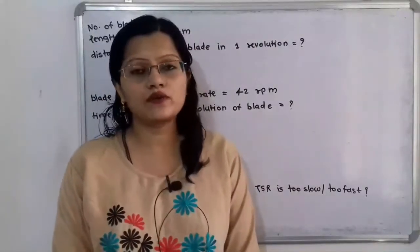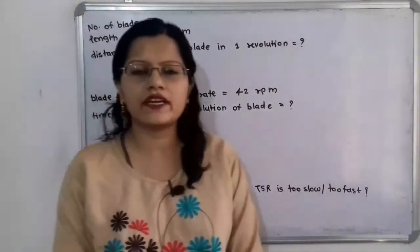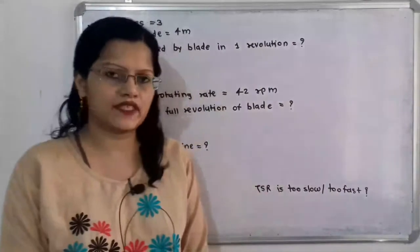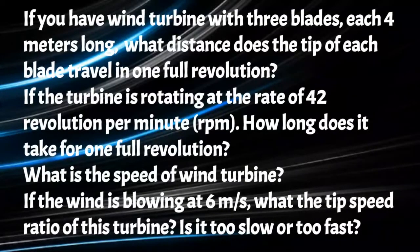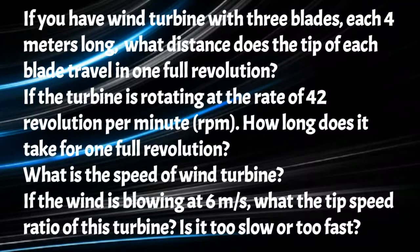Hello friends, this is Priyanka. Today we are going to solve a problem on wind energy for the calculation of tip speed ratio. The problem: if you have a wind turbine with three blades each four meters long, what distance does the tip of each blade travel in one full revolution? If this turbine rotates at 42 revolutions per minute, how long does it take for one full revolution? What is the speed of the wind turbine? If the wind is blowing at 6 meters per second, what is the tip speed ratio, and is it too slow or too fast for maximum power?